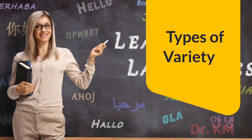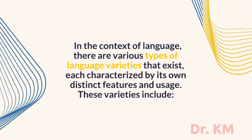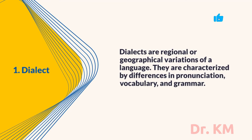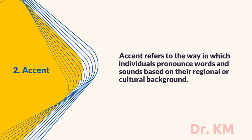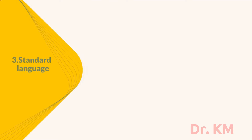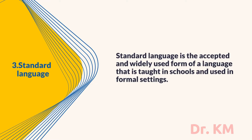Types of Variety: In the context of language, there are various types of language varieties, each characterized by its own distinct features and usage. These include: dialects, which are regional or geographical variations characterized by differences in pronunciation, vocabulary, and grammar; accent, which refers to the way individuals pronounce words based on their regional or cultural background; and standard language, which is the accepted and widely used form taught in schools and used in formal settings.